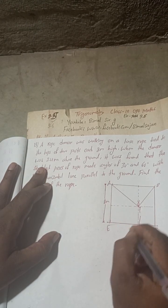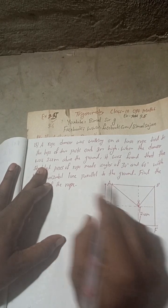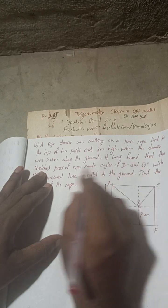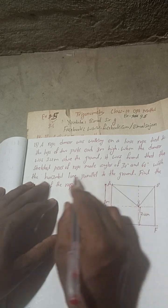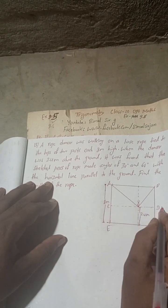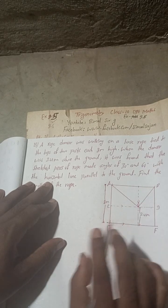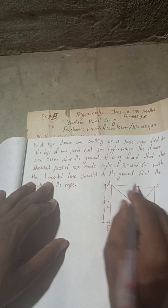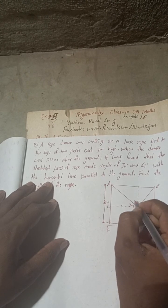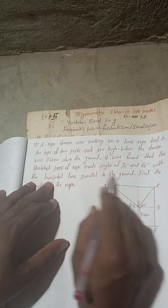This is the ground level. When the height of the dancer from the ground is 2.4 meters, it was found that the stressed piece of rope makes an angle of 30 degrees and 60 degrees with the horizontal line — this horizontal line CD is parallel to the ground. If it is parallel, then the offset is also parallel. So if this makes 30 degrees here and 60 degrees there, then similarly these alternate angles will also be 30 degrees and 60 degrees.